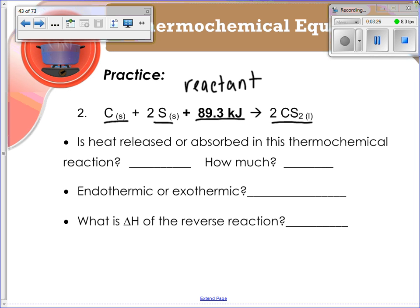Is the heat released or absorbed in this thermochemical reaction? If our heat is a reactant, that means you are adding, you need that heat as a reactant in order to produce your product. So it's going to be absorbed. How much? Again, it's the value that's given to you. Is this endothermic or exothermic? Because you're absorbing that heat and you're taking it on as a reactant, it is endothermic.